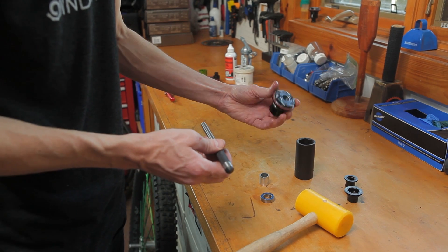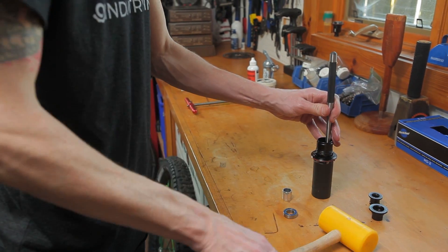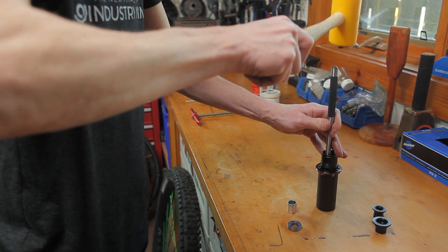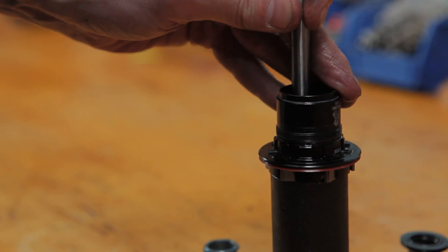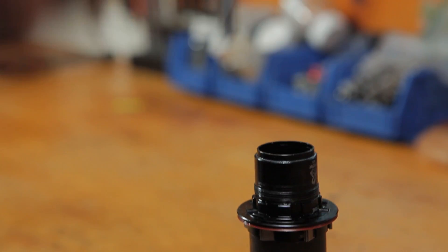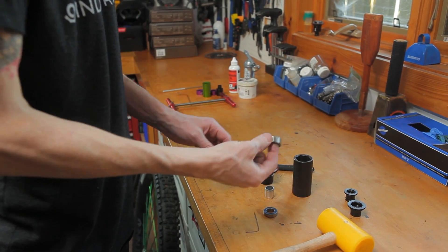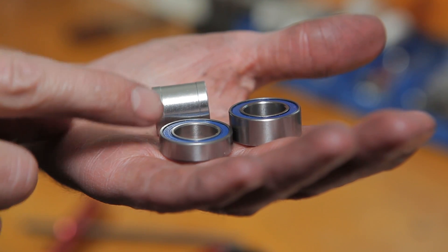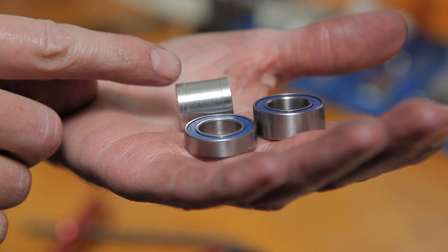Using a deep socket, set the freehub body in place to remove the inner bearing. Follow the same procedure for removing the bearing as straight as possible. The 15mm axle on the Hydra allows for a larger cross-section on both of these freehub bearings. This is for increased durability.